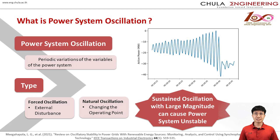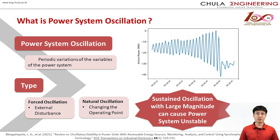Power system oscillation is the periodic variation of the variables of a power system. It has two types: forced oscillations caused by external disturbance, and natural oscillations which normally happen by changing the operating point. But no matter what type of oscillation it is, if the oscillation has large magnitude for a sustained duration, it can cause the power system to become unstable. In the worst case, it causes a blackout.